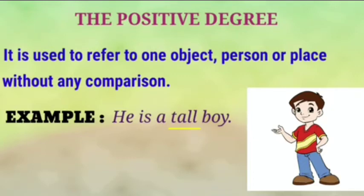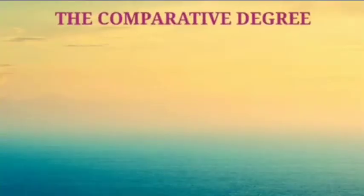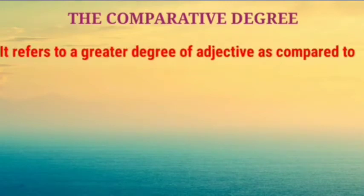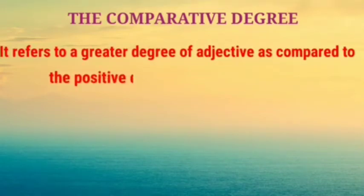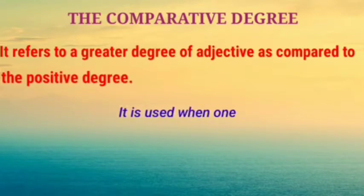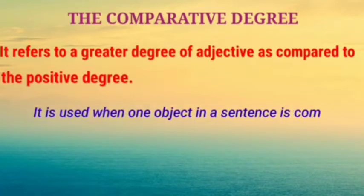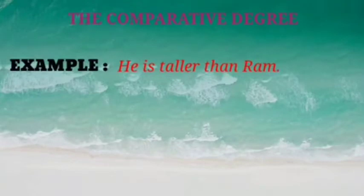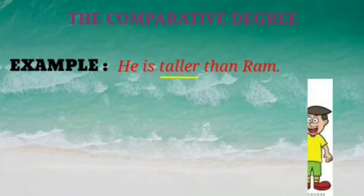The comparative degree refers to a greater degree of the adjective as compared to the positive degree. It is used when one object in a sentence is compared with another. For example, 'He is taller than Ram.' In this sentence, 'taller' is the comparative degree of the adjective because two objects are compared.